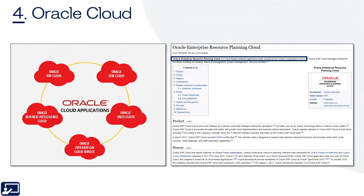Fourth topic: Oracle Cloud. In September of 2012, Oracle began changing the name of its Fusion or Fusion Cloud applications to Oracle Cloud, or more specifically, Oracle Cloud SaaS applications, one of its three service lines.